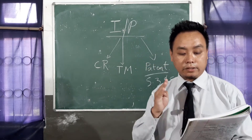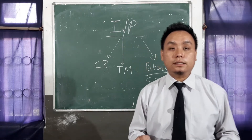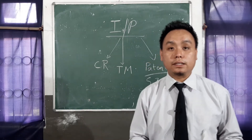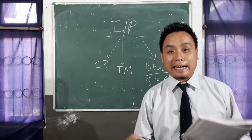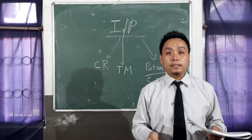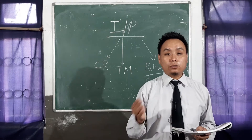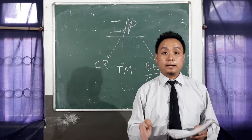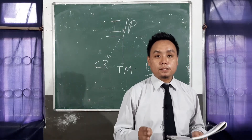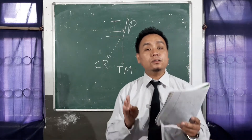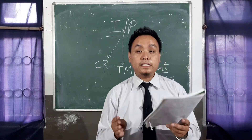The third non-patentable category is any upgrade or discovery relating to atomic energy. Atomic energy is related to atom bombs or nuclear plants. If a scientist creates a new theory or discovers something new in atomic science, they cannot claim patent rights. The reason is simple: atomic energy is useful but at the same time very dangerous to humankind. These are the three things on which an inventor cannot claim patent according to Section 3 and Section 5 of the Indian Patents Act.